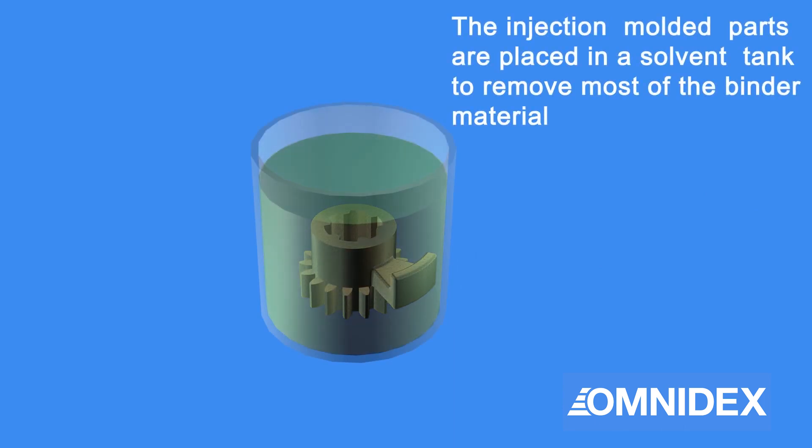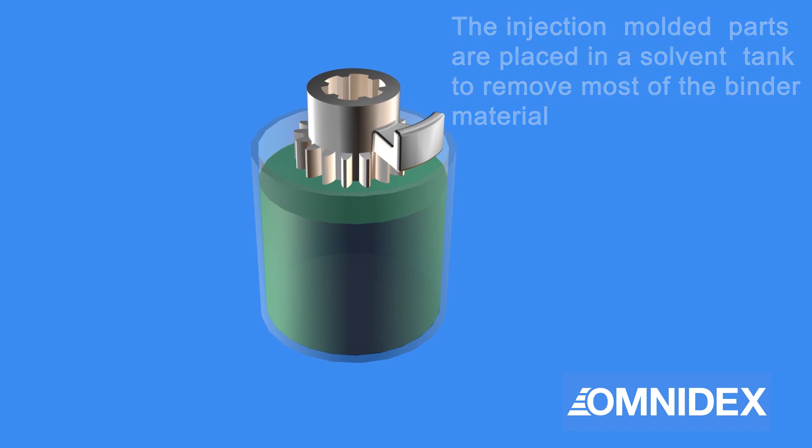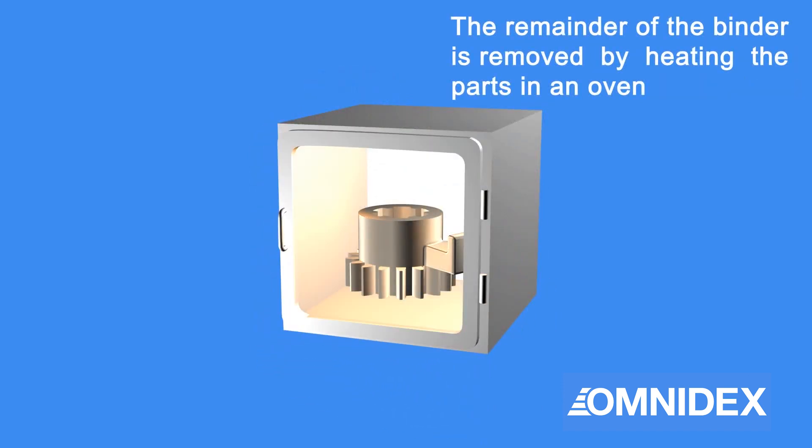The molded parts are then placed in a tank filled with solvent to remove the polymeric binder. The parts are further heated in an oven to remove any remaining binder.